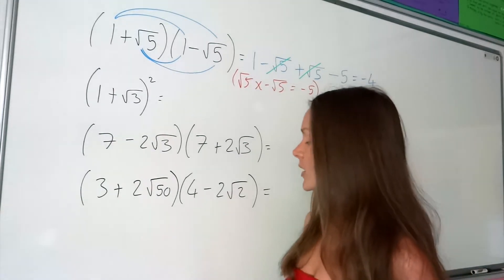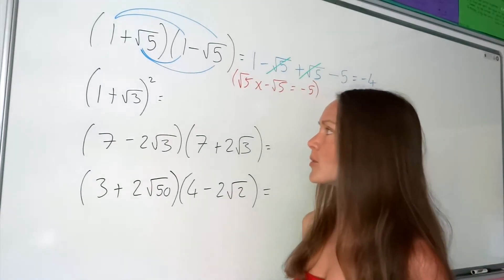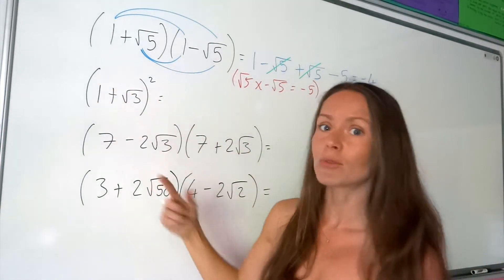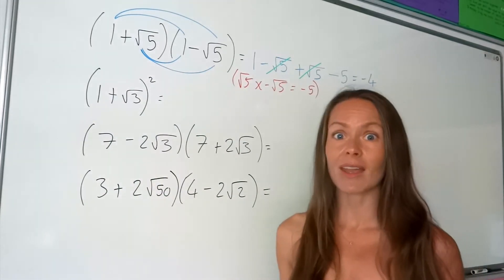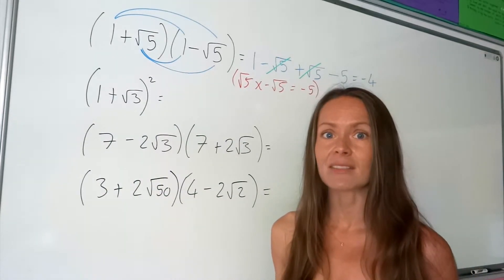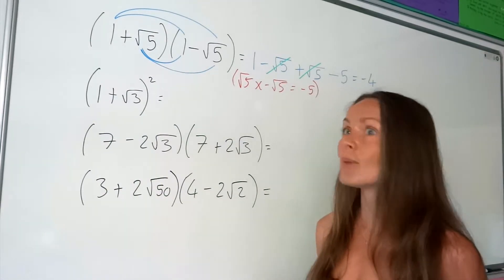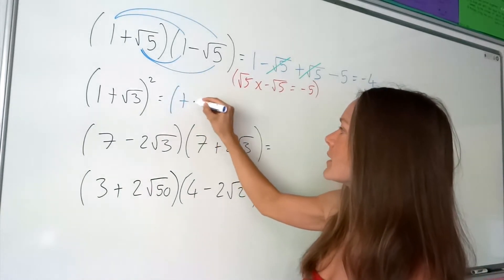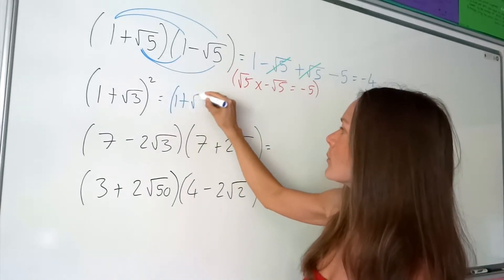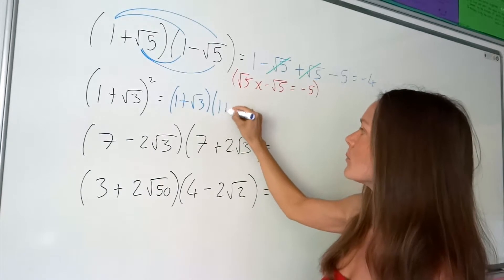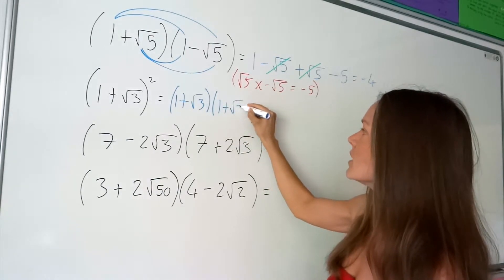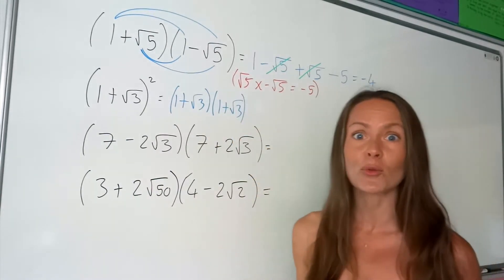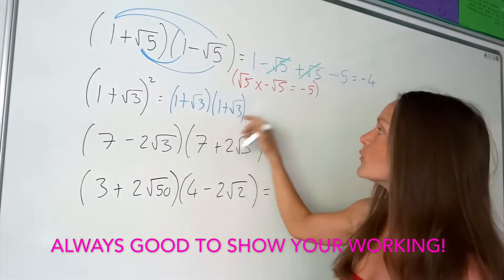On to the next one. Don't make the common mistake of trying to square both these numbers. Remember what squared actually means — it means multiplying something by itself. So really, we're multiplying 1 plus root 3 by 1 plus root 3. Write out that bracket twice just to show that you're multiplying it by itself.